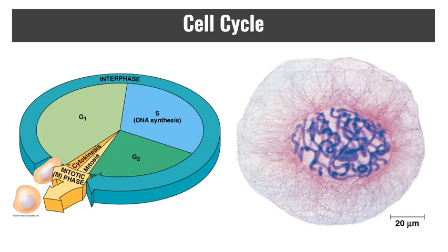The cell cycle is primarily interphase, which is divided into G1, S, and G2. During G1, the cell grows and synthesizes proteins. During S phase, chromosomes replicate and divide to form sister chromatids. During G2, the cell continues to grow and prepares for cell division. These were called GAP phases because nothing appeared to be happening under the light microscope. We now more correctly refer to them as growth phases, but the name stuck.